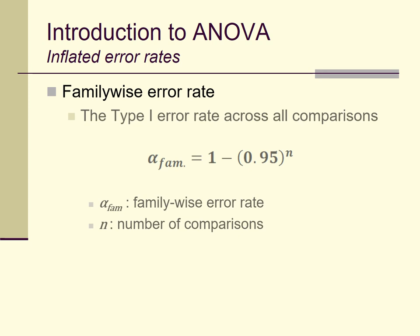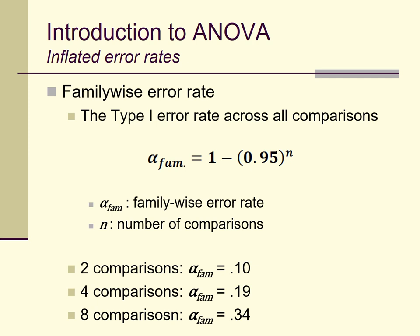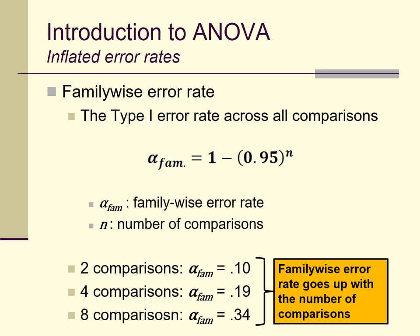There's a formula to compute the family-wise error rate: take 0.95, raise it to the power of the number of comparisons, and subtract from 1. This gives the family-wise type 1 error rate, assuming each individual test uses alpha = 0.05. Plugging in different values shows the error rate rises quickly. With four tests, we have an almost 0.20 type 1 error rate — considerably larger than 0.05 — and it gets even higher as we add more tests.